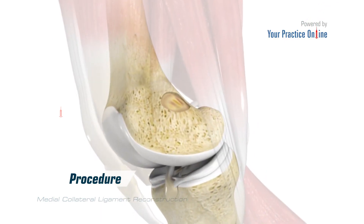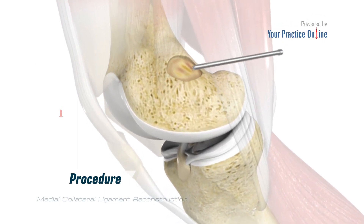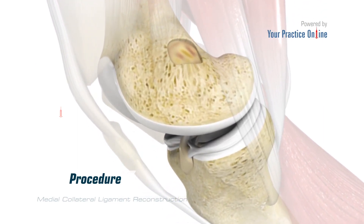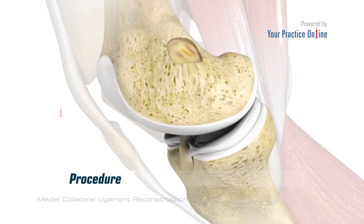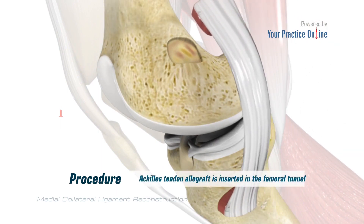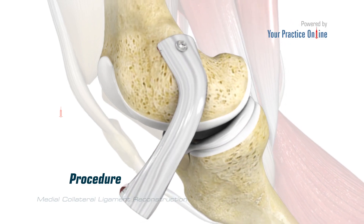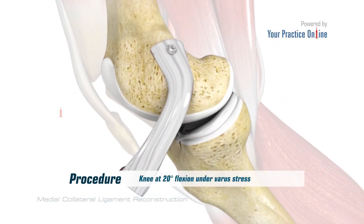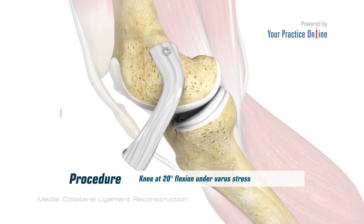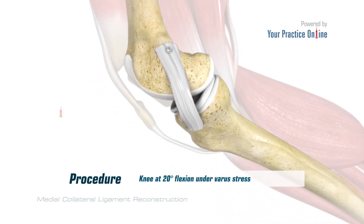For placing the graft, a tunnel is created from a guide pin to the anatomic insertion of the MCL on the tibia. The Achilles tendon allograft is inserted in the femoral tunnel and fixed using screws. The MCL graft is made taut with the knee at 20 degrees flexion under varus stress and fixed to the tibia with a screw and a spiked washer.